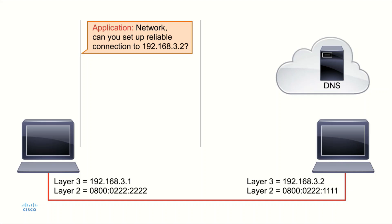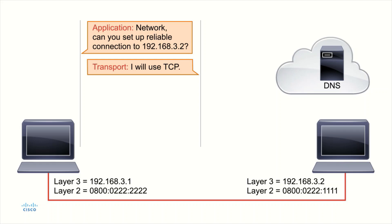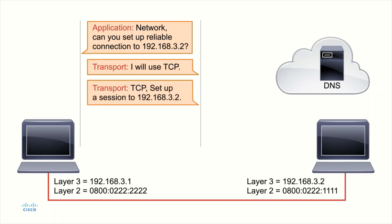Let's assume this is the TCP/IP stack, so we're going to skip the presentation and session layers. The application layer says, I need to send this reliably, so I'm going to use the transport layer, which provides reliable service. The transport layer says, no problem — I'm going to use TCP. Remember, TCP is the connection-oriented service, and we need this sent reliably with sequence numbers and acknowledgements. So the transport layer instructs TCP to set up a session to 192.168.3.2.